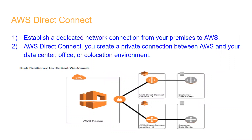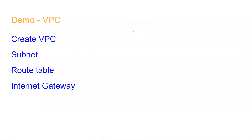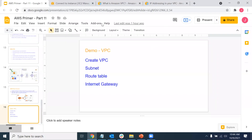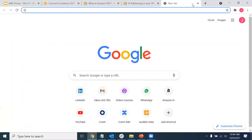Now we'll start doing the lab. For today's lab, I'll show you how to create a VPC - creating my own network, then a subnet, route table, and internet gateway. Let me log into AWS. First let me show you the default VPC.